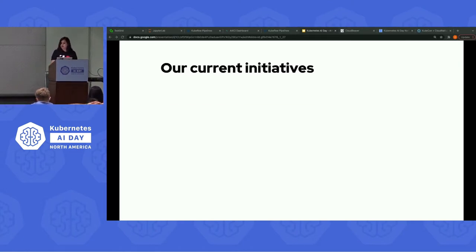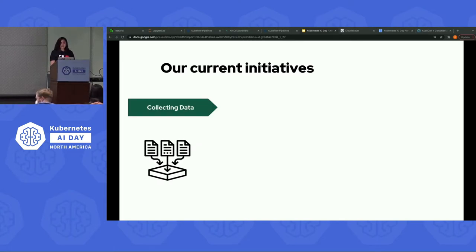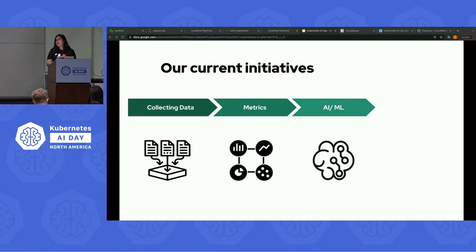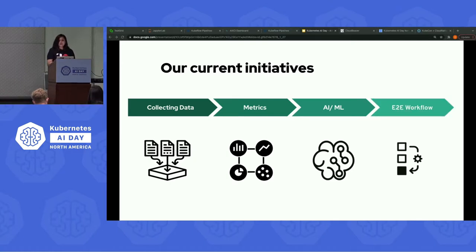We are focused on cultivating an open source community that uses open operations data and an open infrastructure for data scientists and DevOps engineers to collaborate. So let's look into some of our current initiatives. Firstly, we are collecting data from various open data platforms and creating a community around open CI data sources. We are quantifying and evaluating the current state of the CI workflow using key performance indicators, building AI and ML techniques to improve the overall CI workflow, and creating a reproducible end-to-end workflow using multiple open source technologies like Elyra, Kubeflow Pipeline, JupyterHub, and Seldon, all built and operated on the operate-first environment.